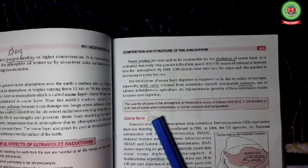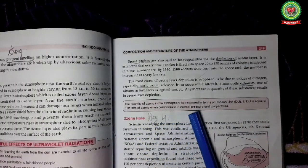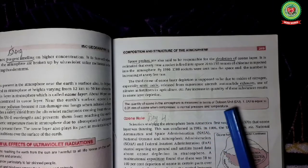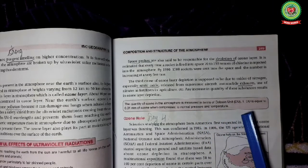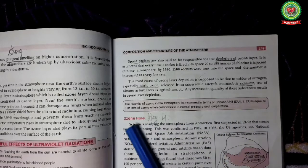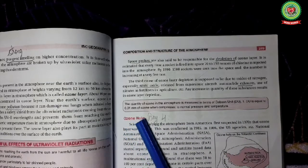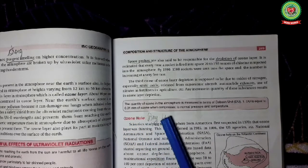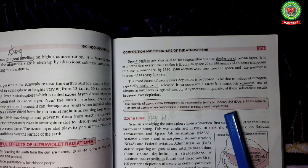The quantity of ozone in the atmosphere is measured in terms of dobson unit. One DU is equal to 0.01 mm of ozone when compressed to the normal pressure and temperature.